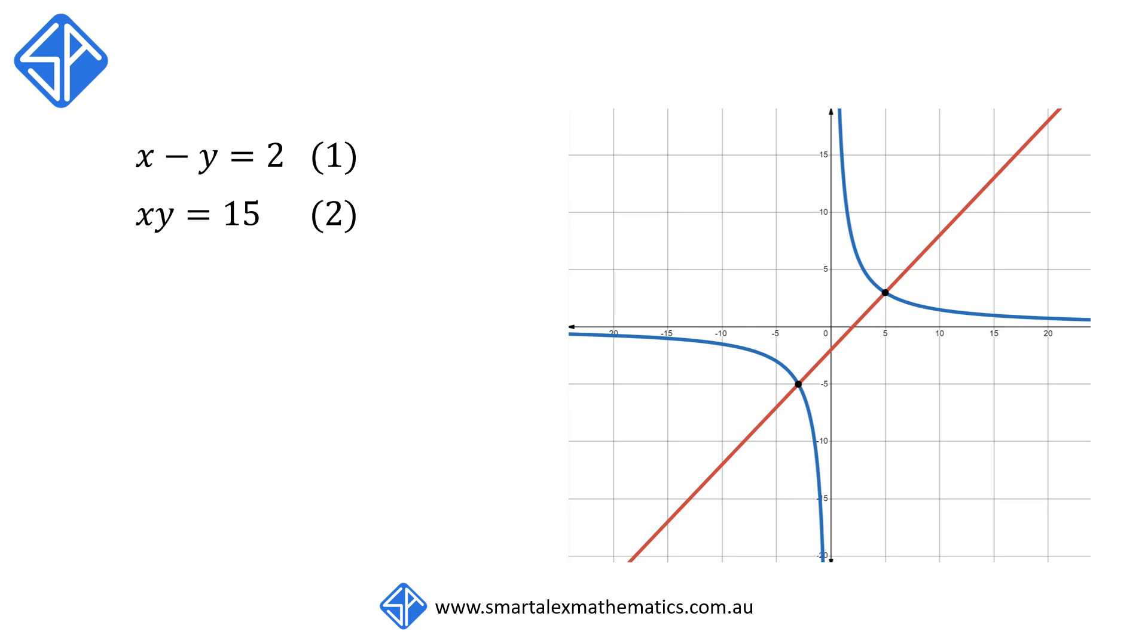So let's try to make sense of our solutions. Our first equation, x minus y is equal to 2, is the straight line graph. And the second equation, xy is equal to 15, is a hyperbola. Our solutions are actually the points of intersection of these two graphs.